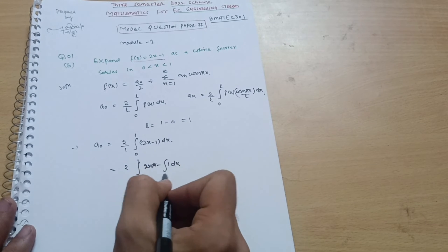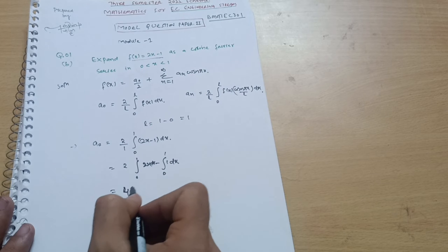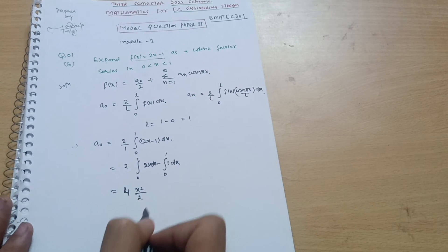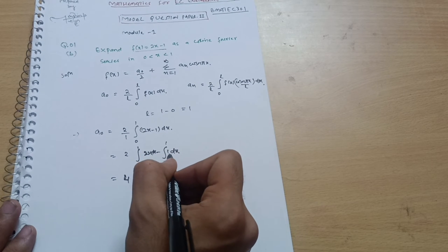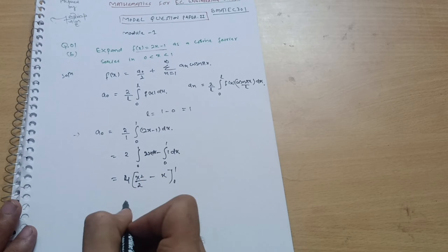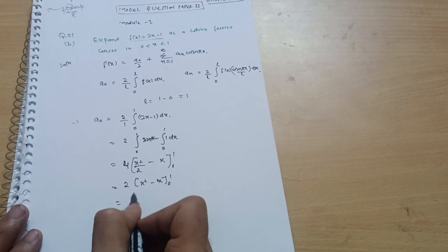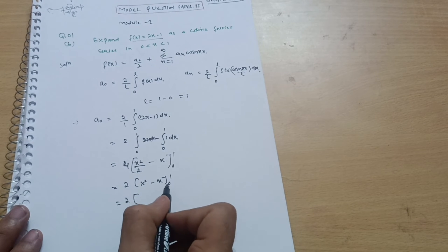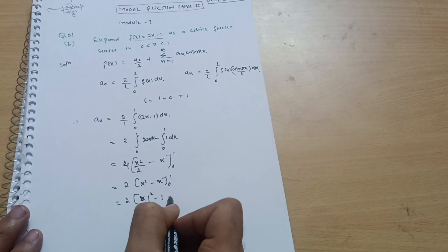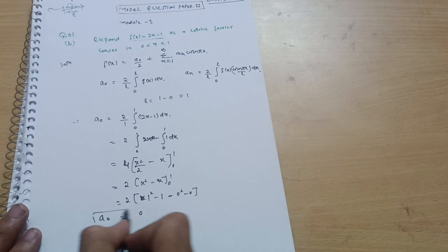Integrating: a₀ = 2 × [x²/2 − x] from 0 to 1. The 2 and 2 cancel, giving [x² − x] from 0 to 1. Applying the upper limit: 1² − 1 = 0, and the lower limit gives 0² − 0 = 0. So a₀ = 0.